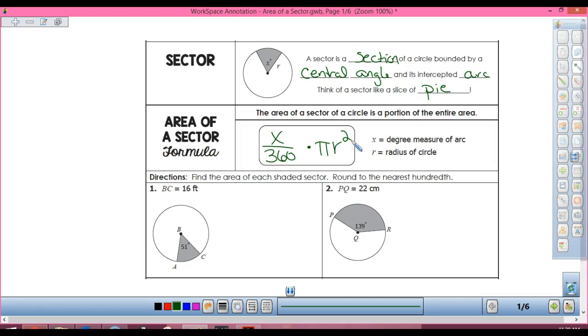So number one, what's my degree? 51 degrees, so 51 over 360 times, what's my r squared? 256, so just like we did yesterday. 51 divided by 360 times it by 256.